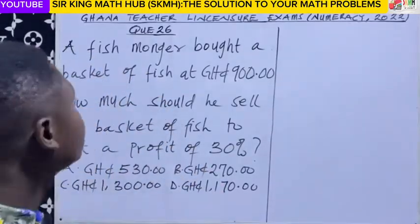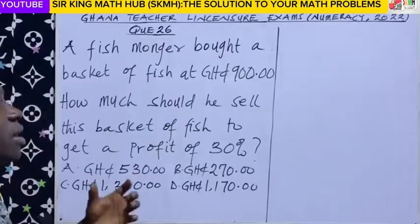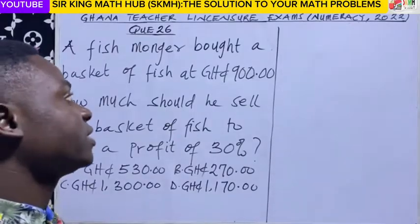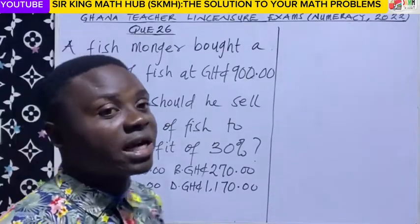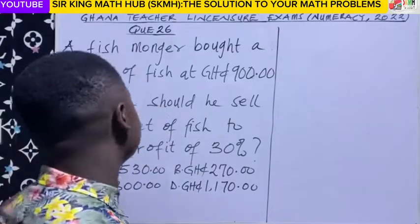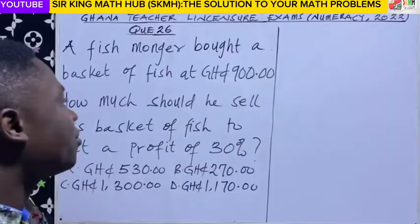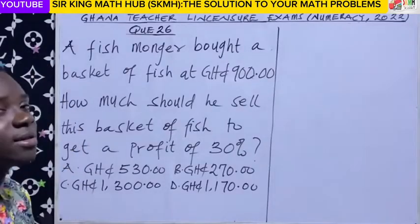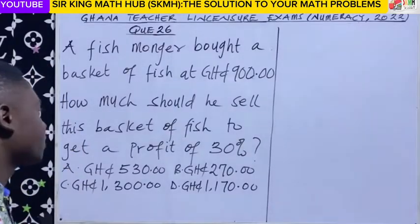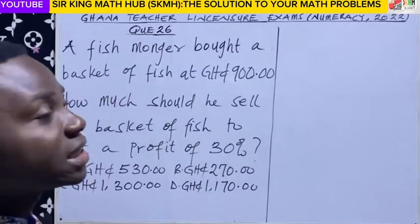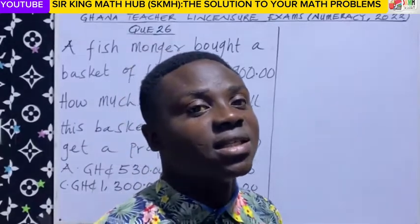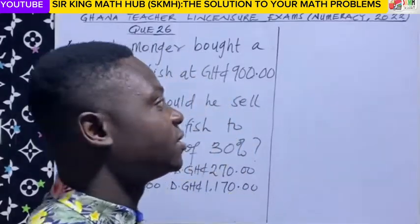Question 26. A fishmonger bought a basket of fish at 900 Ghana cedis. How much should he sell this basket of fish to get a profit of 30%?